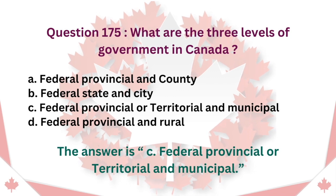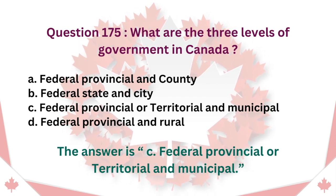Question 175: What are the three levels of government in Canada? A. Federal, Provincial and County. B. Federal, State and City. C. Federal, Provincial or Territorial and Municipal. D. Federal, Provincial and Rural. The answer is C. Federal, Provincial or Territorial and Municipal.